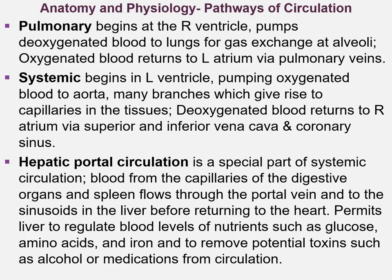The vascular system of the heart consists of arteries, arterioles, capillaries, venules, and veins. It's constantly filled with about five liters of blood, delivering oxygen, nutrients, and other substances to the cells of the body and removing waste products. Pulmonary circulation begins at the right ventricle, pumping deoxygenated blood to the lungs for gas exchange at the alveoli. The oxygenated blood is returned to the left atrium through the pulmonary veins — this is the only time oxygenated blood goes through a vein.